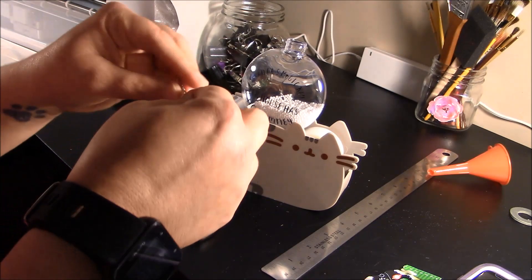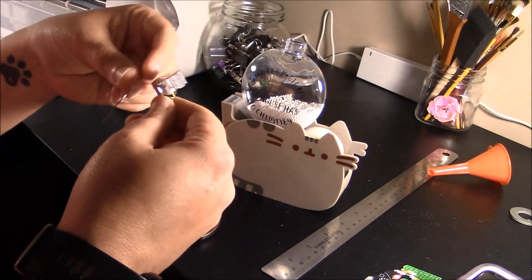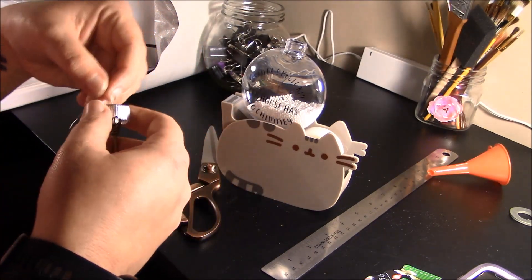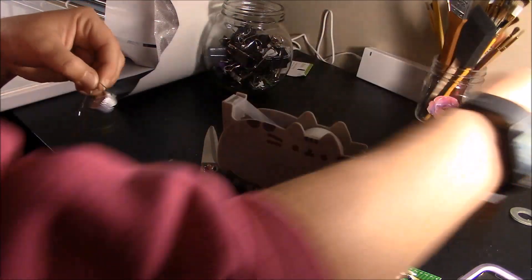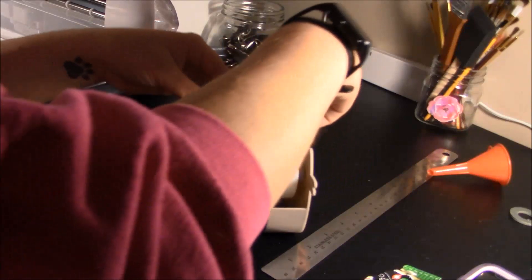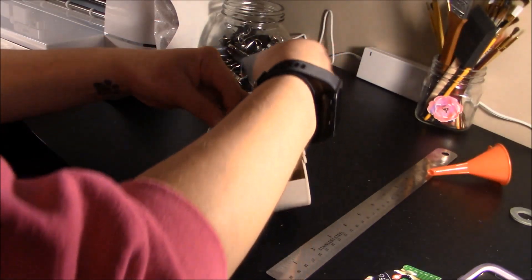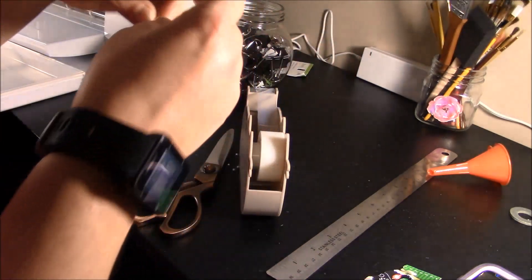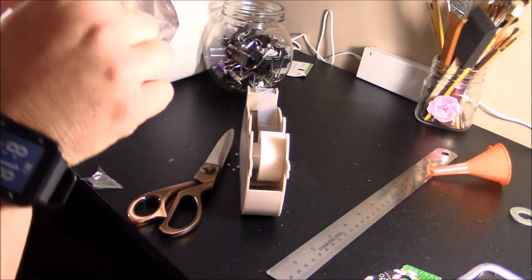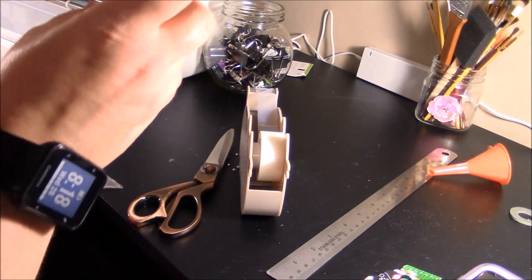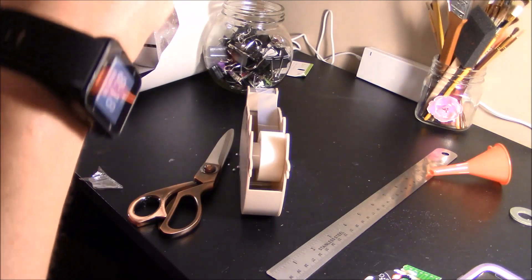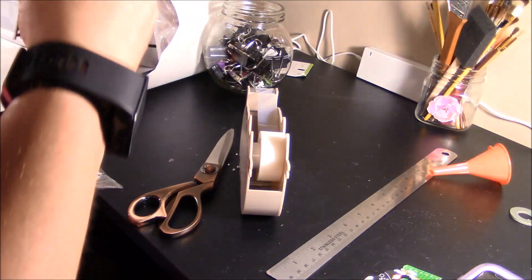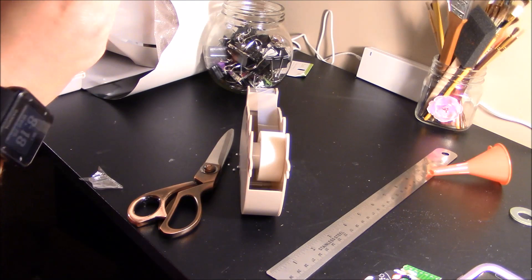But when you use the invisible string, it will hold better. And it will keep your key in place. This is really super slippery for some reason. So every time I go to put it back in, it just wants to come back out. So I'm just, for viewing purposes, I'm just going to tape it down so you guys can see it. But when I do this with the invisible thread, it holds a lot better. And the key doesn't end up stuck in the lid. And it actually holds it where it's supposed to be.